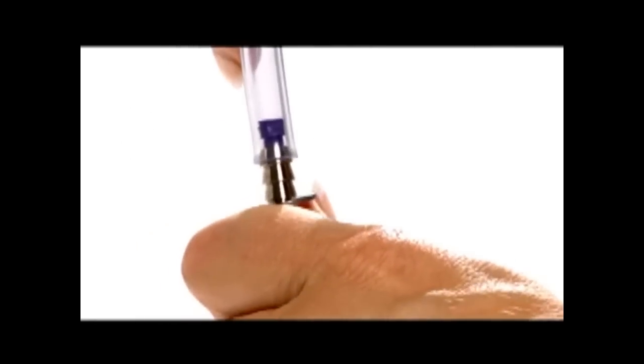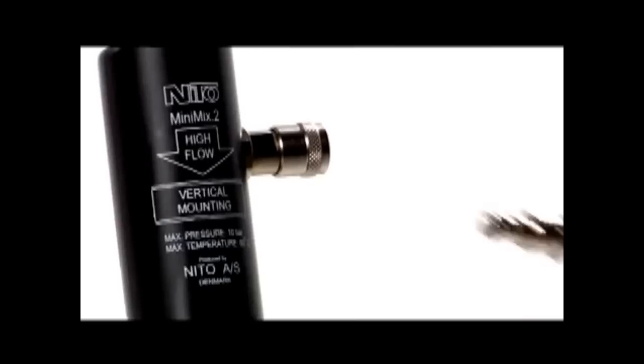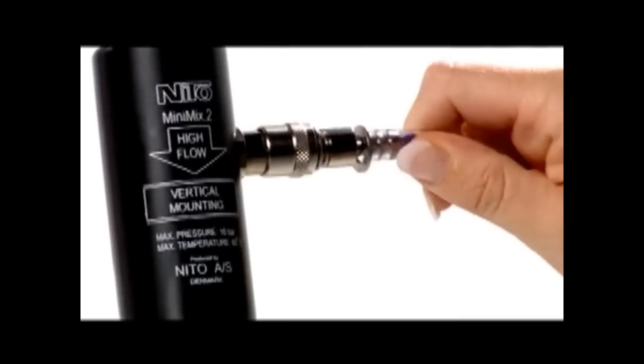Mount the valve connector onto the suction hose. Mount the suction hose onto the side of the dosage unit. Lower the suction hose into the chemical container.